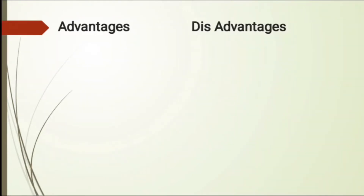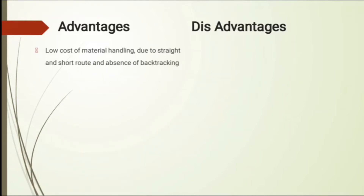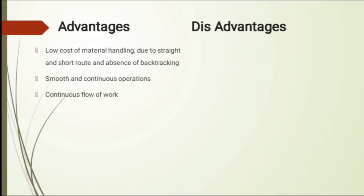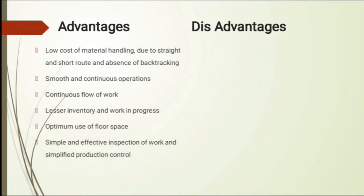The advantages of the product or line layout include: low cost of material handling due to straight and short routes and absence of backtracking, since the layout is linear and in sequence order. There is also smooth and continuous operation, and continuous flow of work. When the product moves linearly, operations are continuous and flow is smooth. Inventory is less and there is less work in progress.